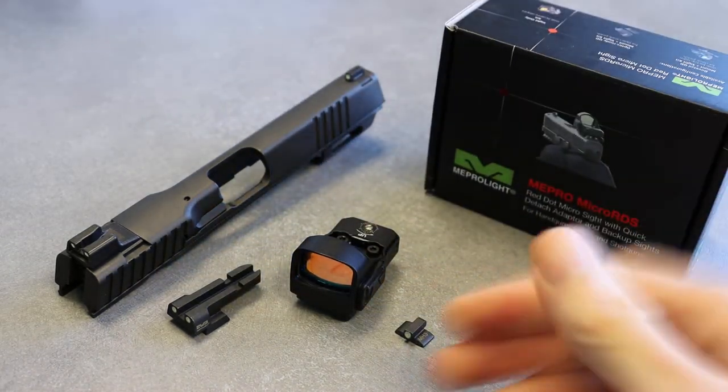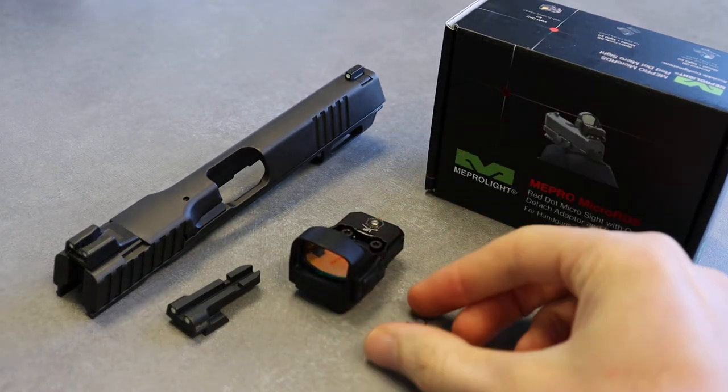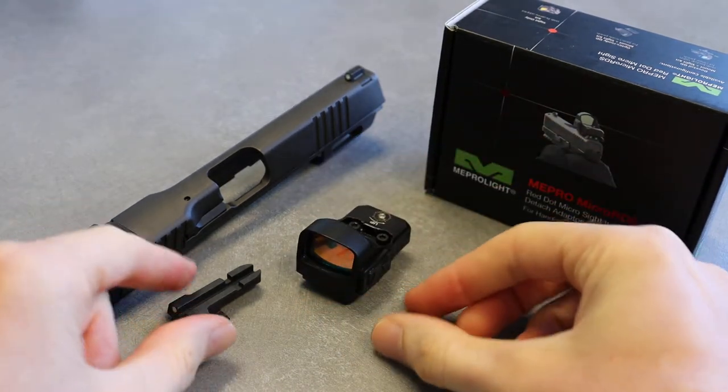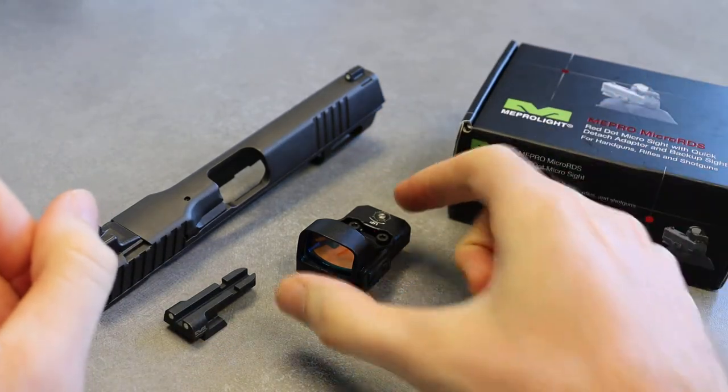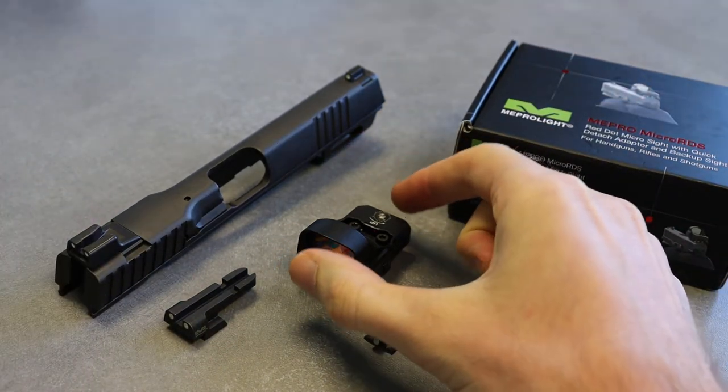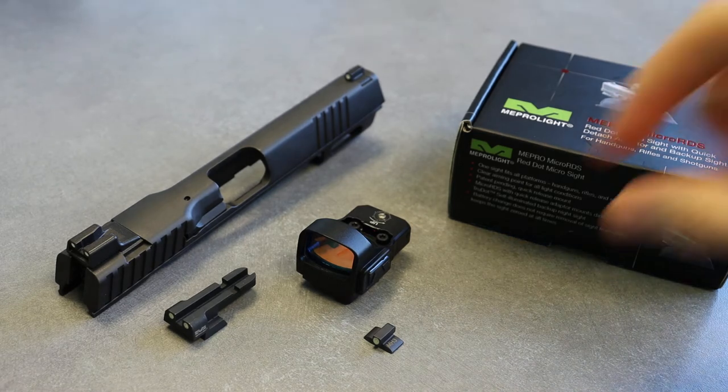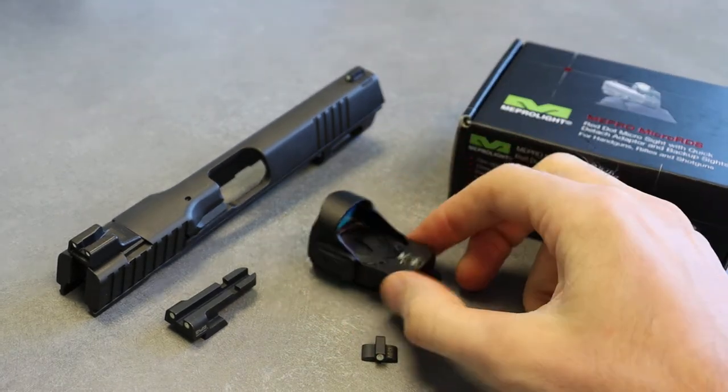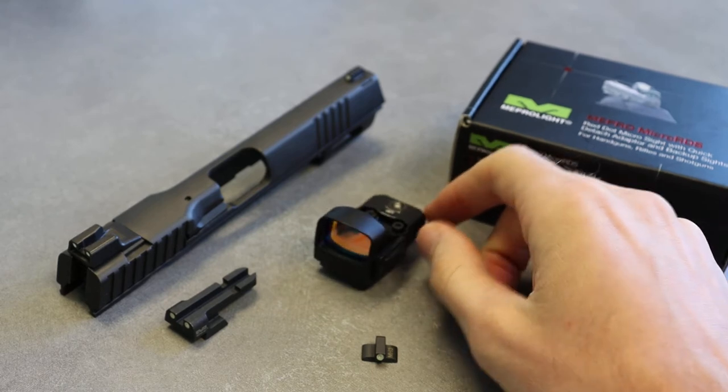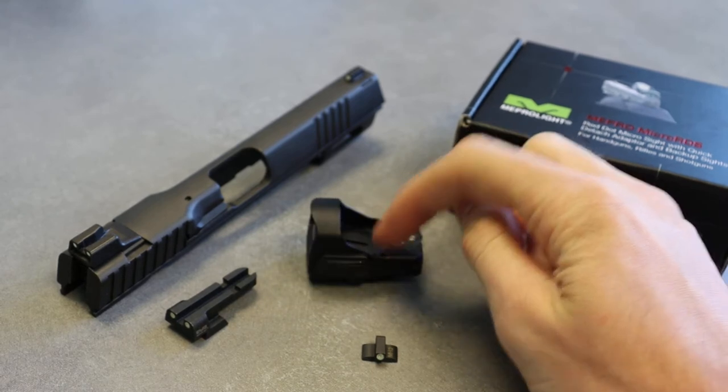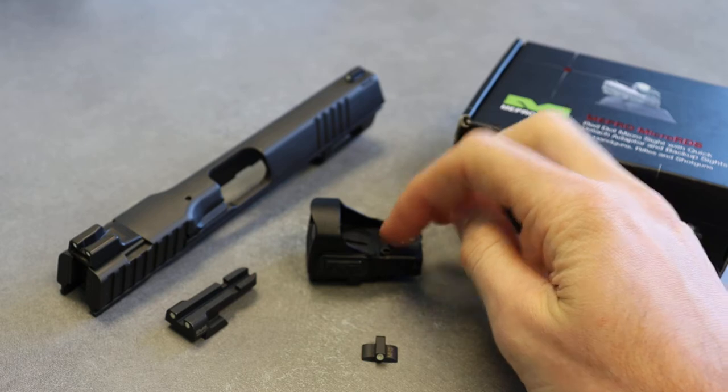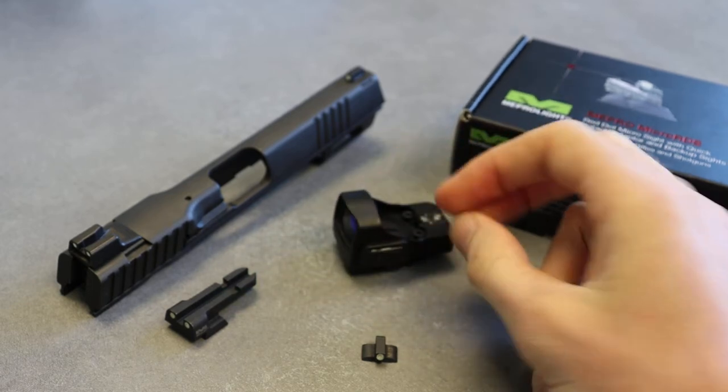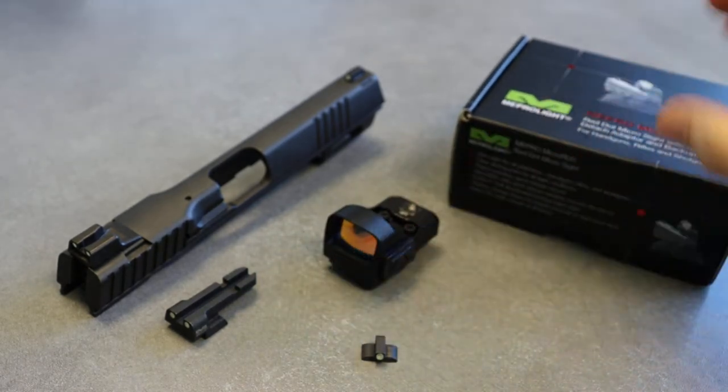In this package you'll get your micro RDS, the optic portion along with the little QD adapter, your night sights, and a rubber cover. You'll also have a polymer screwdriver for the battery cover, a wrench for the two screws that hold in the QD adapter, cleaning cloth, and stickers.